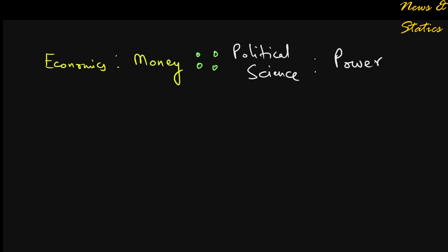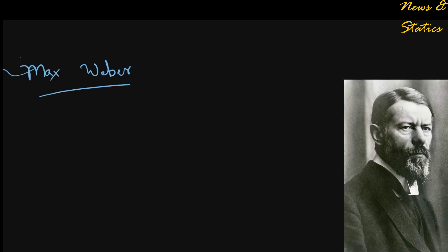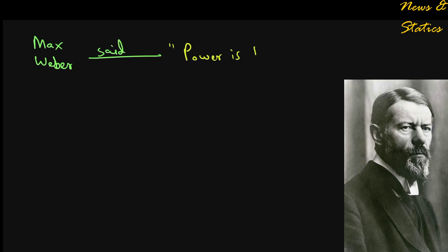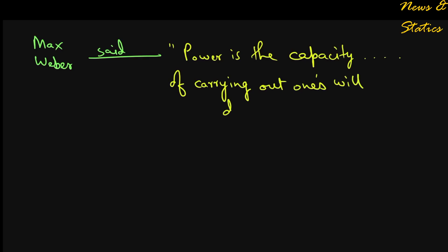For now, let me conclude this dissertation with an analysis of Max Weber's definition of power. You see, Max Weber said that power is the capacity of carrying out one's will despite resistance. Despite resistance.